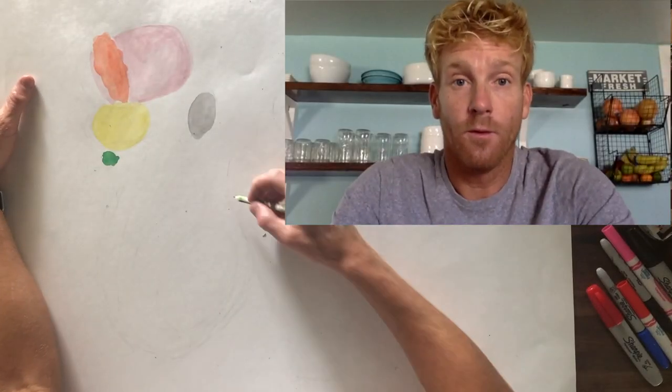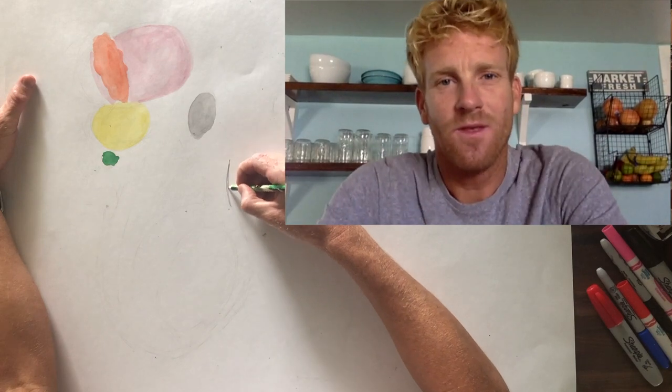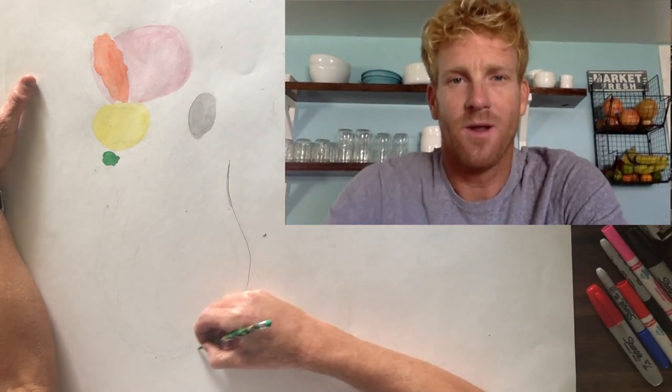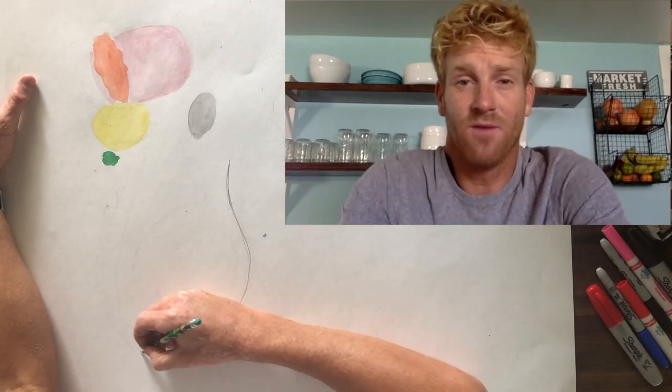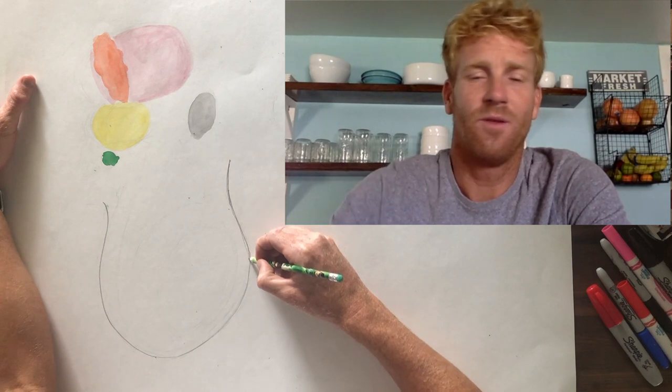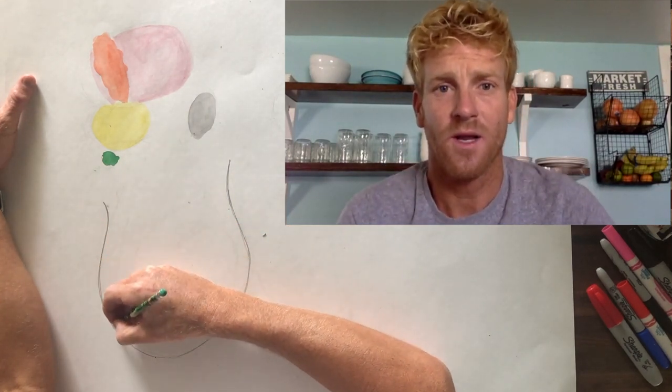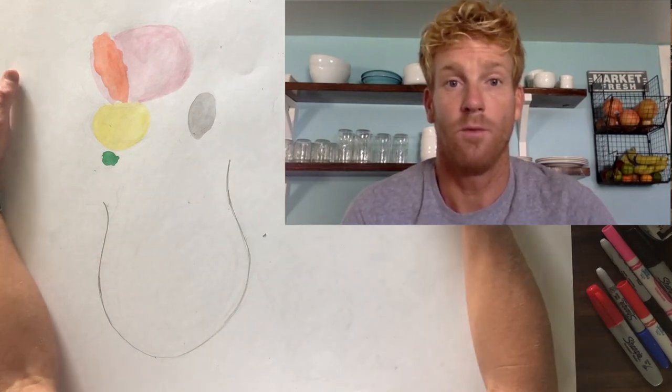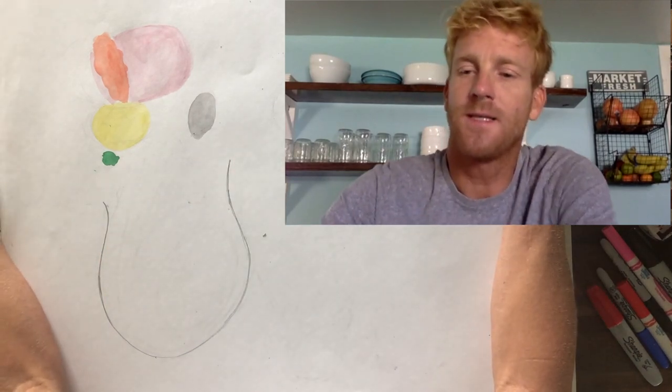The testicles are an organ located outside the body, and this is where sperm are created. You might be wondering if this organ is so important - this is the organ responsible for reproduction in males - why is it located outside the body where it's completely susceptible to injury? Every other important organ in our body is protected underneath bone and tissue, like our brain, our heart, all that. Well, it's all about temperature.